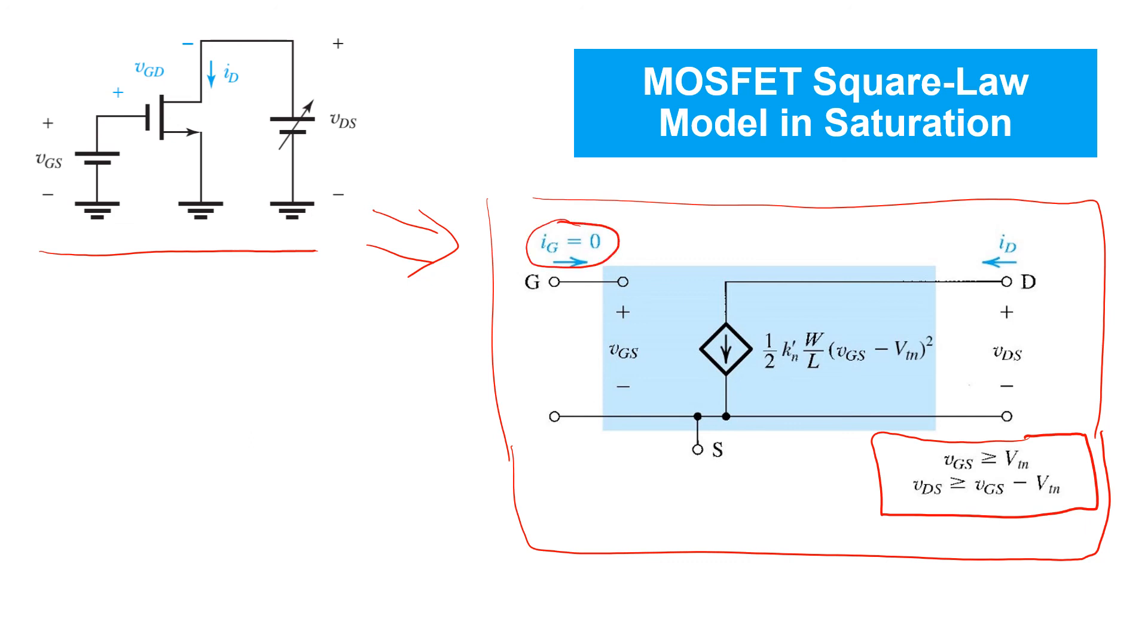The drain current in this expression is determined by the square law. So this is a voltage-dependent current source here, but it's not a linear one, which can complicate analysis. You'll notice in this model, the body terminal's been neglected because it's been assumed that it's connected to an appropriate voltage to ensure that its junctions all remain reverse biased and no current flows into it, so we can neglect that in our analysis.